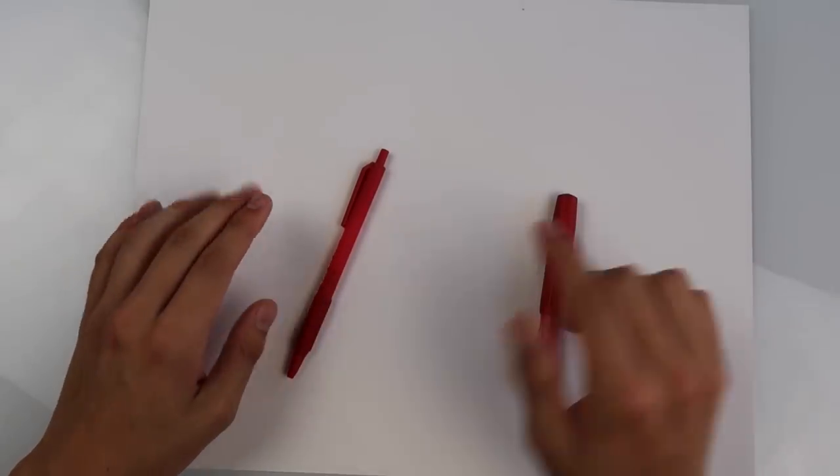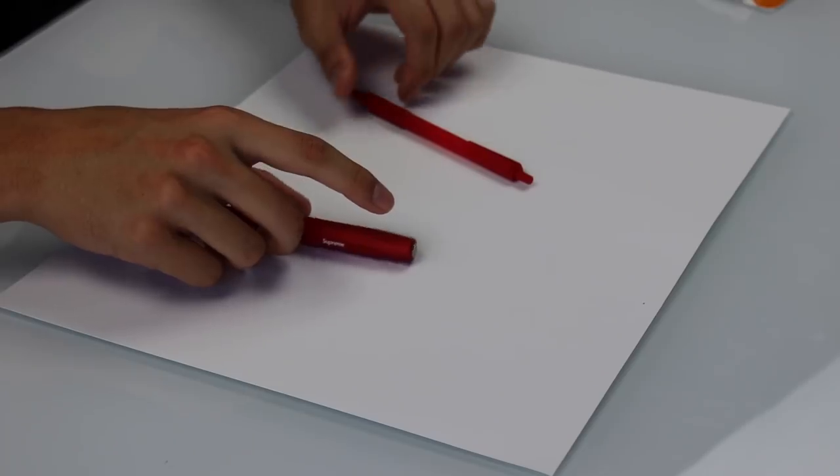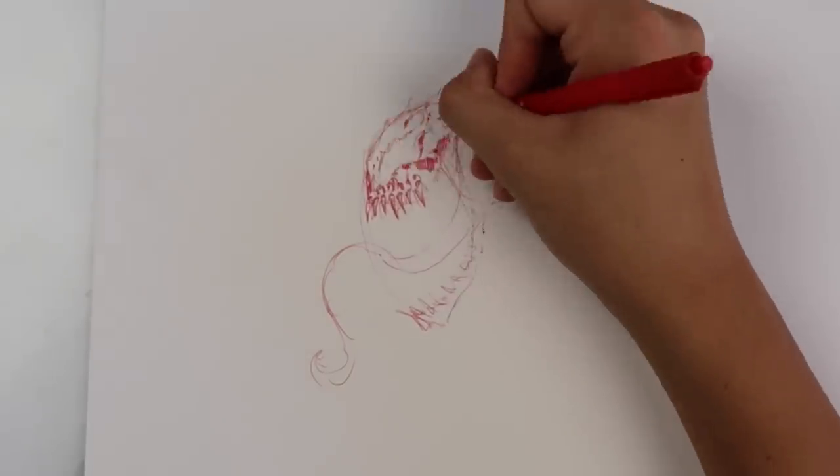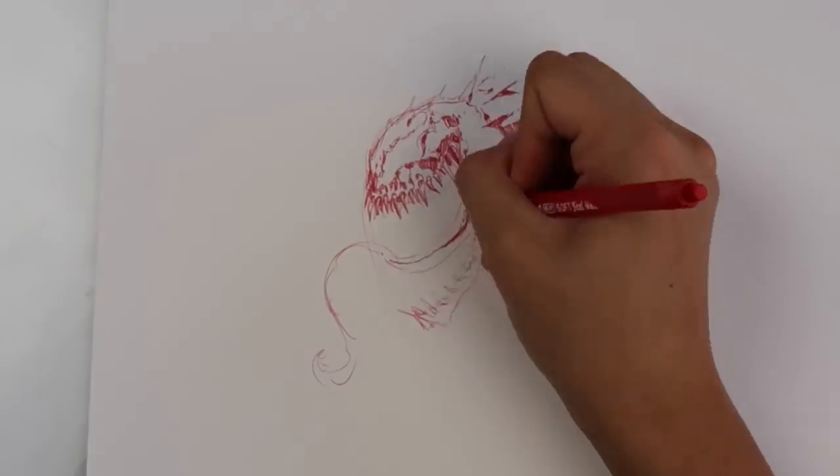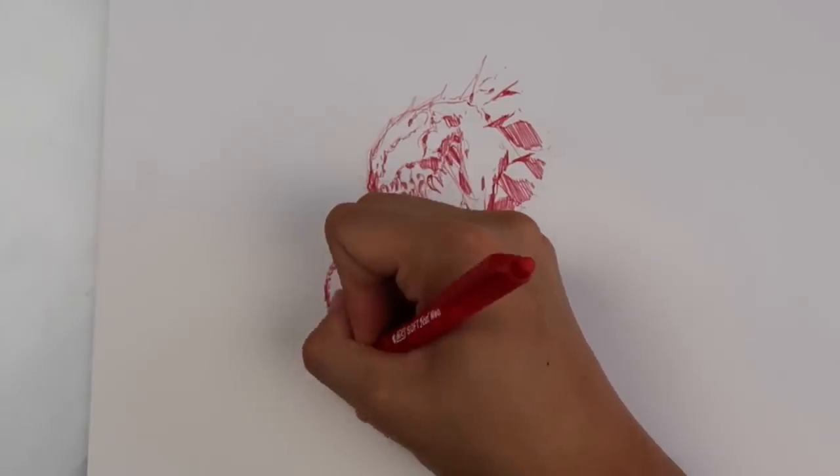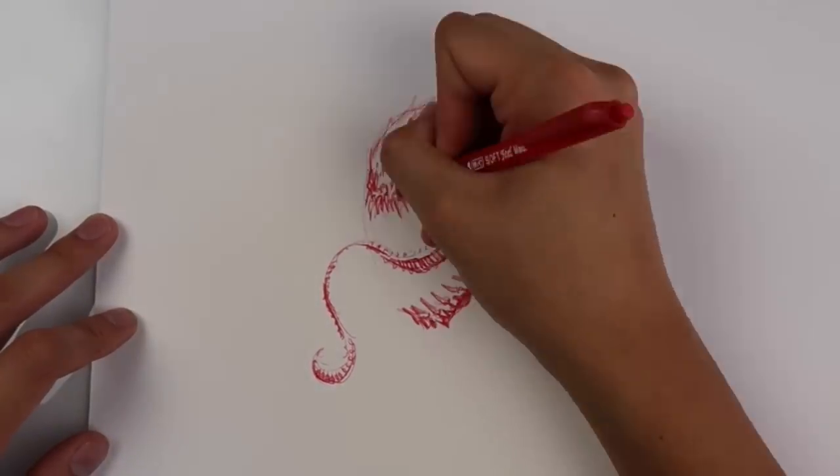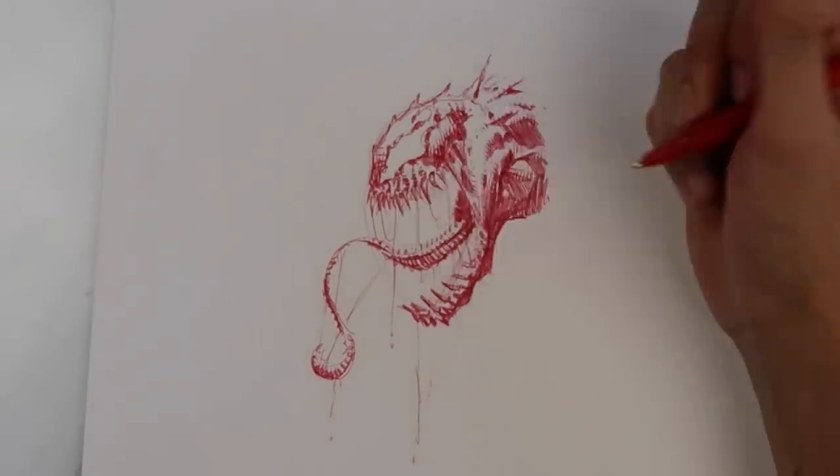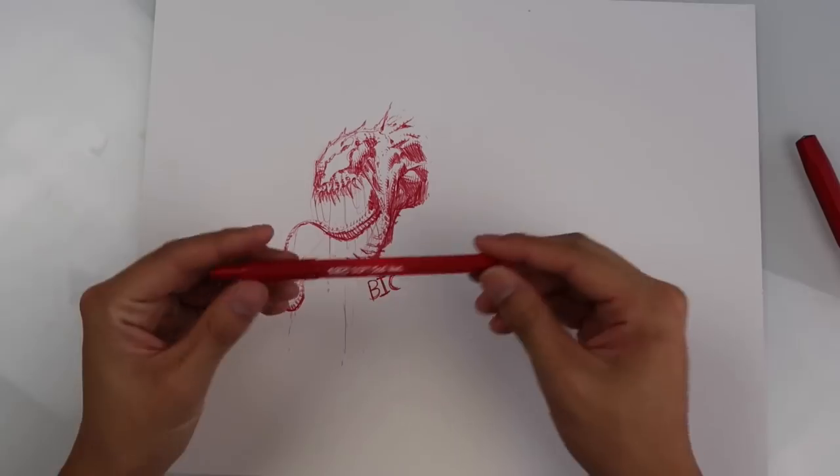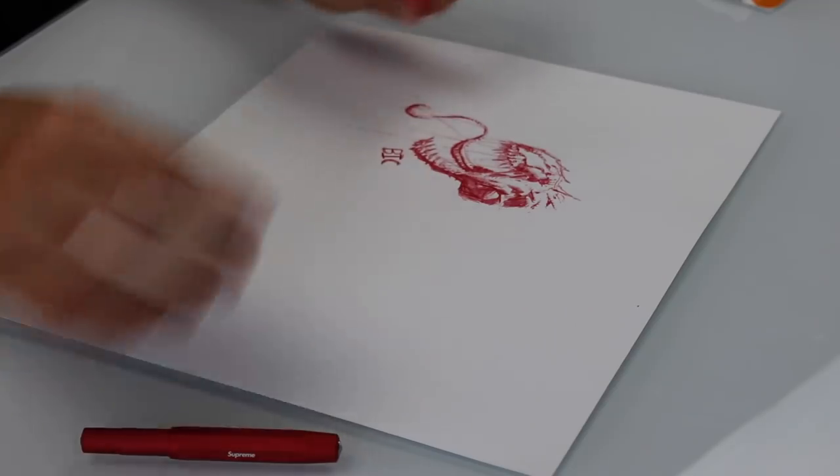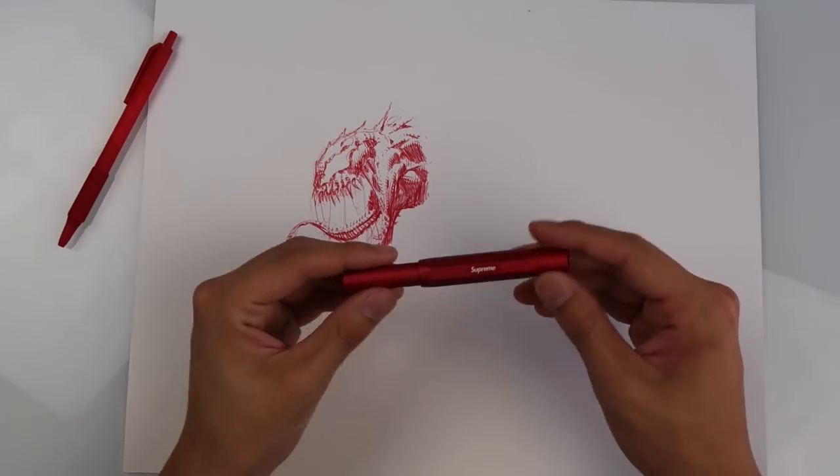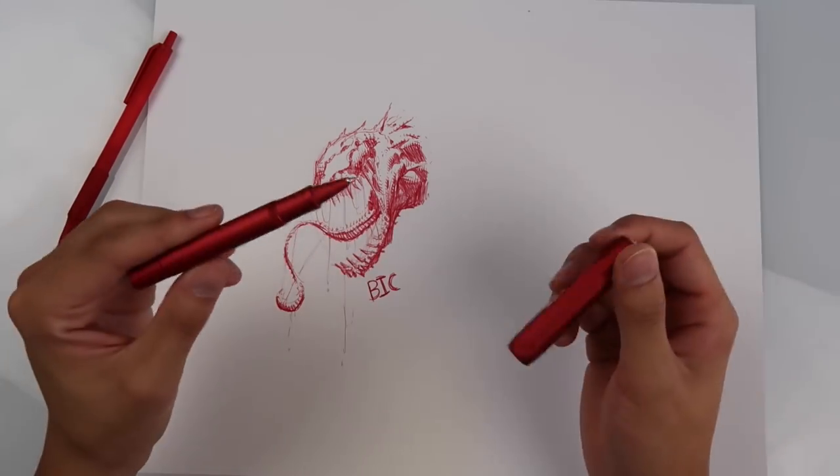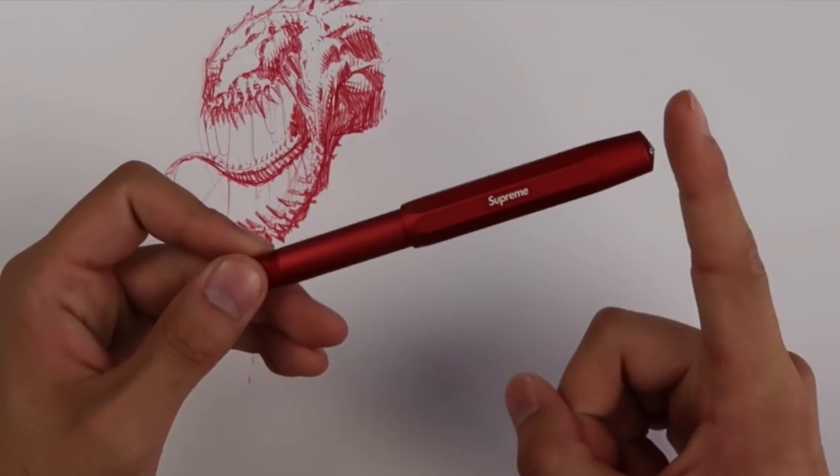Okay. Now the true test. We are gonna test them side by side. We're gonna draw something small. Alright. So that was using the Bic pen. Now it's time to try out the Supreme pen. This is gonna be what determines who wins and who doesn't. Ooh. Just tap that in. Oh yeah.